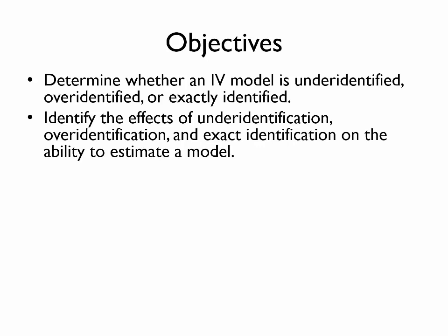This video covers identification in two-stage least squares models. At the end of this video, you should be able to determine whether an instrumental variables model is under-identified, over-identified, or exactly identified, and identify the effects of under-identification, over-identification, and exact identification on the ability to estimate the model.